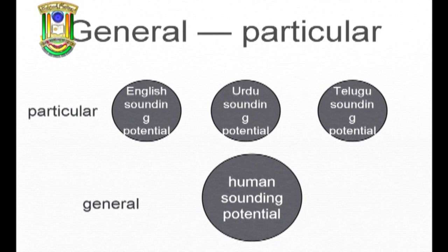So, for example, Urdu, or English, or Telugu, or Nahuatl, or any of the 6,900-plus languages spoken around the world today, they draw on the general sounding potential in different ways. When we refer to the sound system of English or Urdu, what we refer to is how these languages use the general resources at our disposal in making sounds. Only one particular sub-part of the overall human potential is used in a particular language. The challenge, when we learn or teach a new language, is to access that general human potential that lies behind the particular languages we speak.